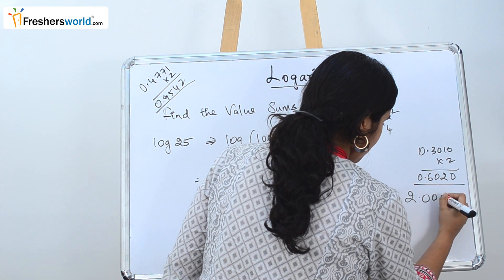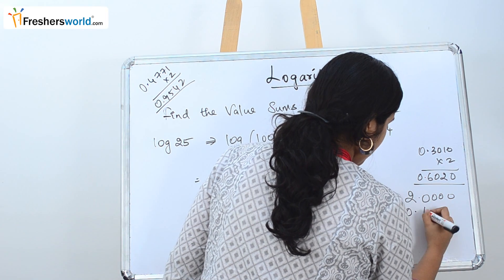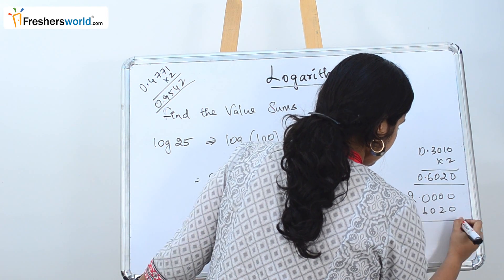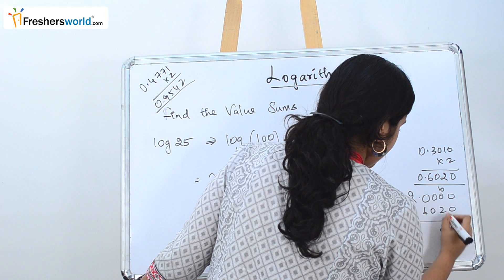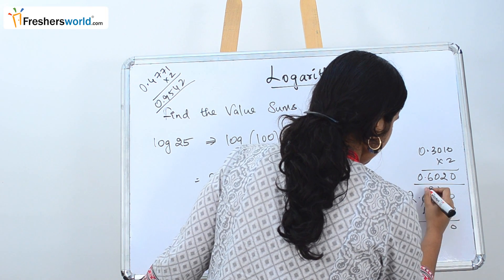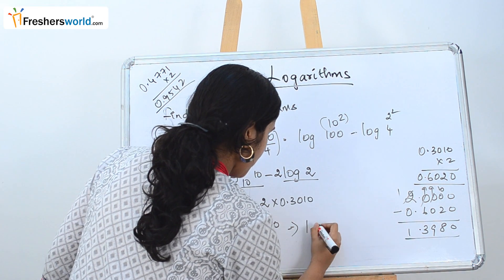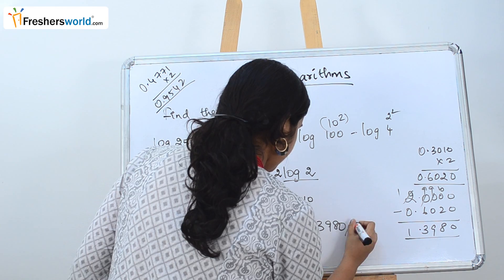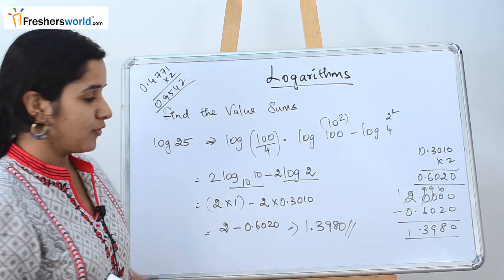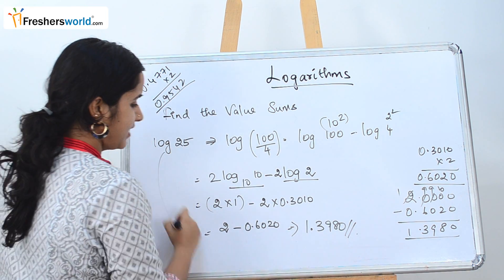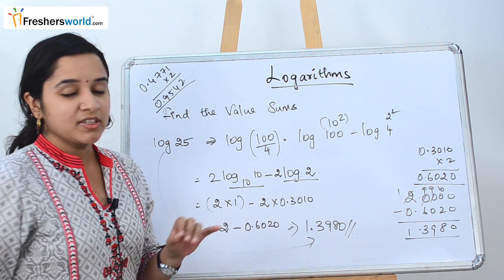So we are subtracting 2 minus 0.6020, which gives us 1.3980. So the answer is 1.3980. So once you solve log 25, the value that you are attaining here is 1.3980.